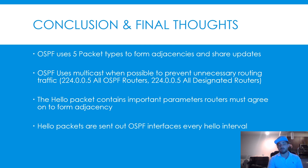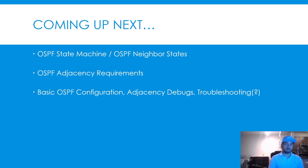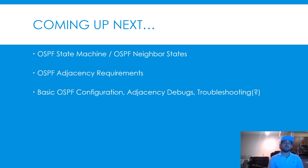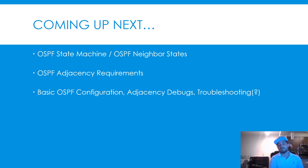Coming up next, I hope to cover the OSPF state machine — OSPF neighbor states, OSPF adjacency requirements, basic OSPF configuration, and possibly some misconfigurations or troubleshooting. After we cover neighbor states and basic config, we'll dive deeper into what designated routers are, why we need them, and how they're elected. I hope this has been informative so far — thank you for watching, please like and subscribe, and I'll see you in the next lesson.